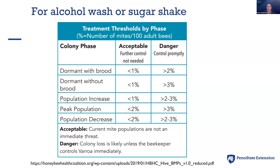Later in the season we really expect mite loads to have increased, and it's not quite as harmful. But if you have a high mite load early, that means you're really going to have a high one late if you don't do anything about it. If you see numbers over 2% or 3%, that's when you're in the danger zone and should be applying a chemical treatment. Hopefully, with cultural and mechanical controls, those levels won't get to this — that's kind of the goal of our IPM program.